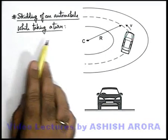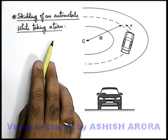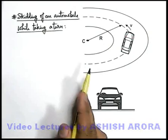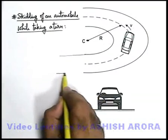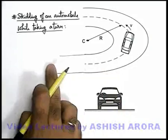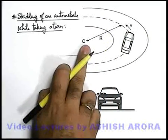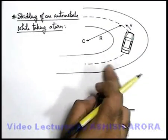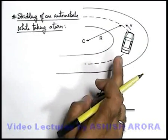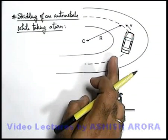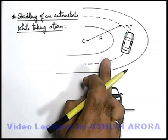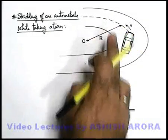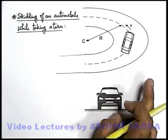Let us discuss skidding of an automobile while taking a turn. Let us consider a circular track, or a straight road on which a car is moving and taking a turn, which is a circular arc of radius r. We know that when a body is in circular motion, a centripetal force is necessary. In the rotating frame, the body experiences an outward centrifugal force.